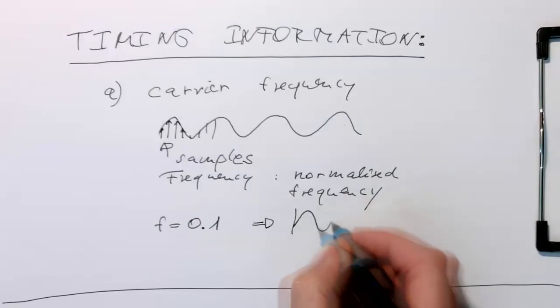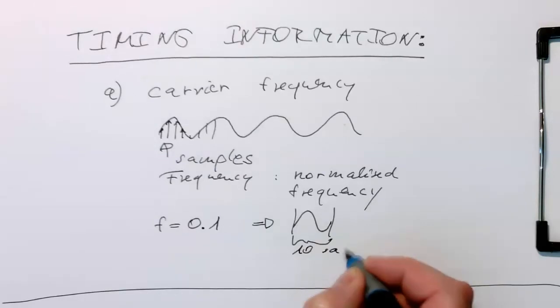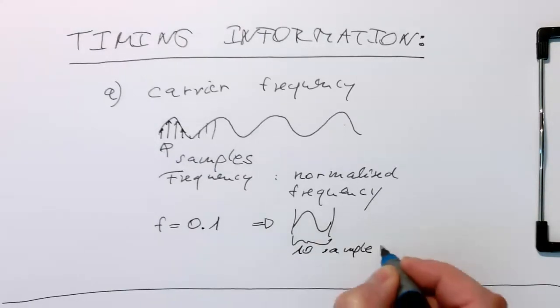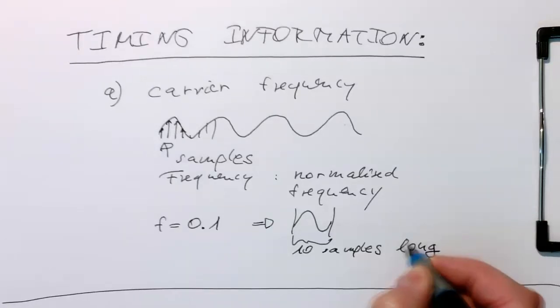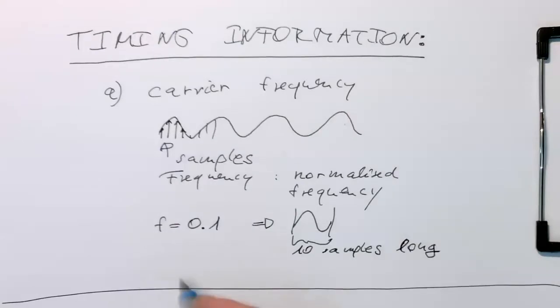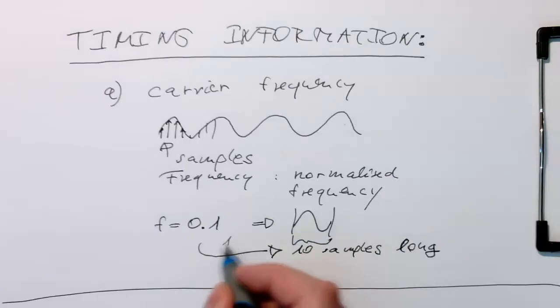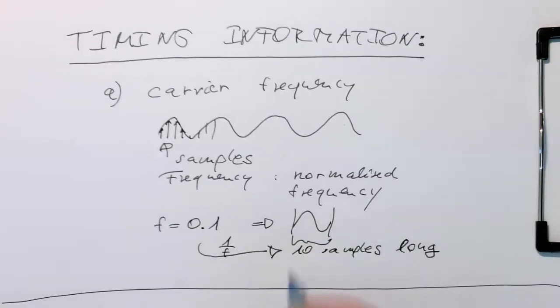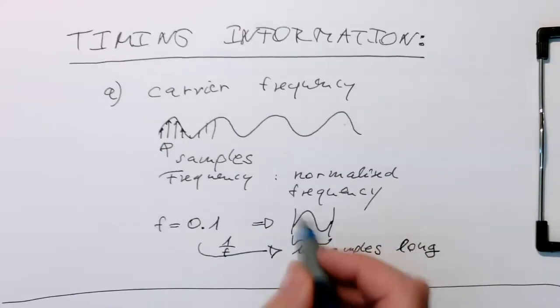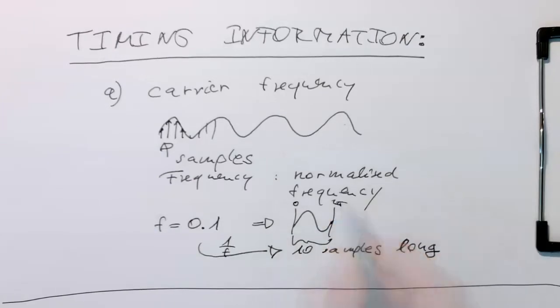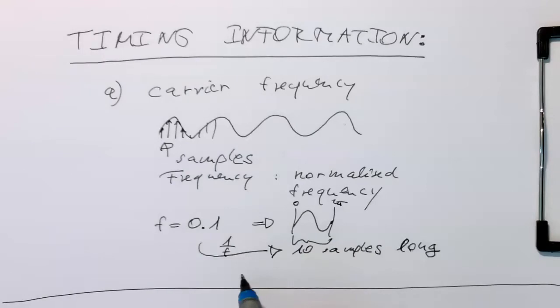That's just simply 1 over f, which gives us a number of samples. This also means that in normal terms, this is 0 and this is 2π. And with that, we can easily define frequency in our sample system.